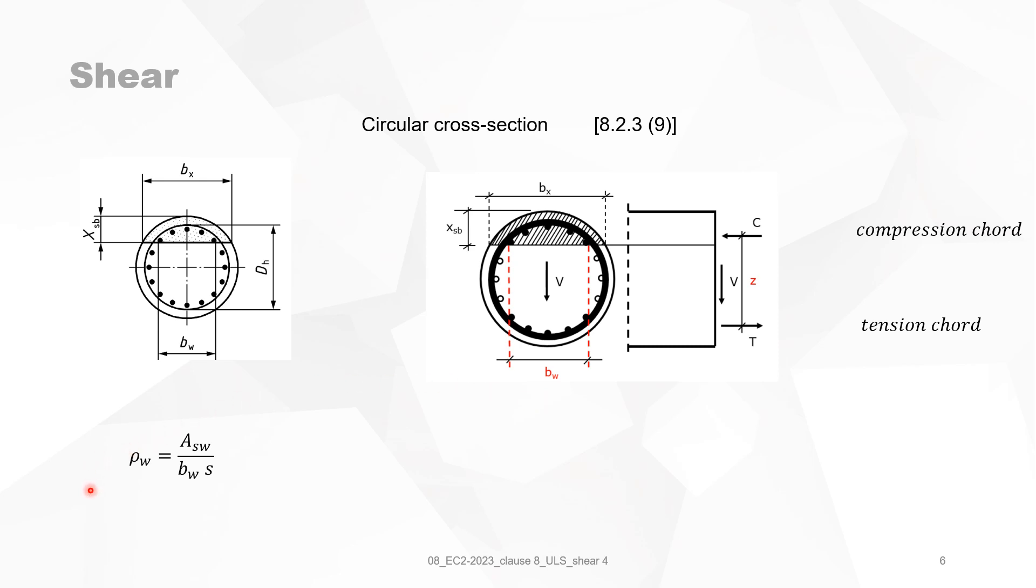The shear reinforcement ratio was given by ASW divided by BW and the spacing S. When you have a circular section, you must multiply this ratio, shear reinforcement ratio, by BW over DH, the hoop diameter. Filling in the ratio of the reinforcement ratio, the shear reinforcement ratio for a rectangular section, rho W. Then you will see that the shear reinforcement ratio for circular sections equals ASW divided by DH and divided by the spacing. Of course, BW must always be smaller than the hoop diameter.